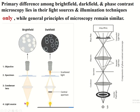This is bright field microscopy. Here the light source is condensed by the condenser lens and focused onto the specimen. From the specimen, the light passes through the objective lens, which magnifies the image and the image is produced. To see a histological specimen in this type of microscopy, you need to stain the specimen.